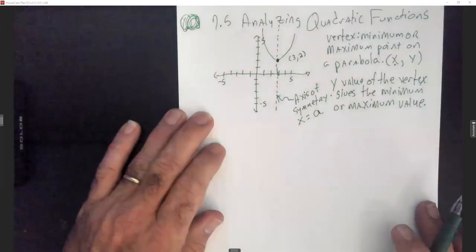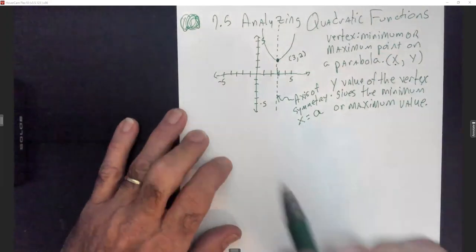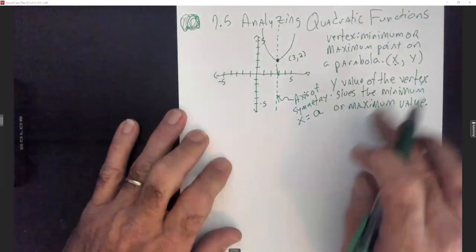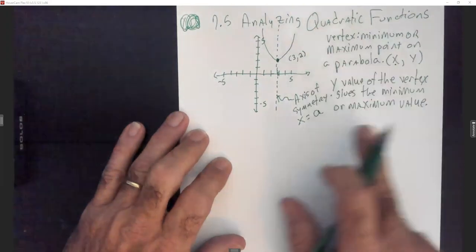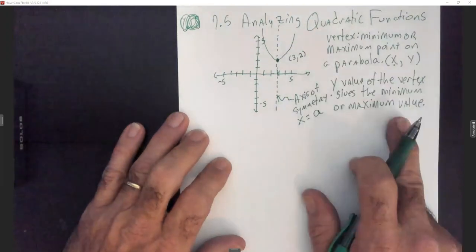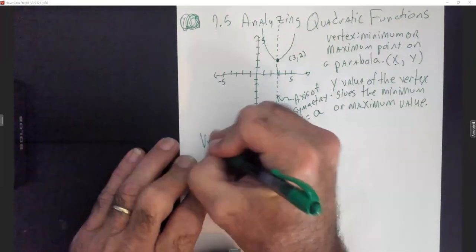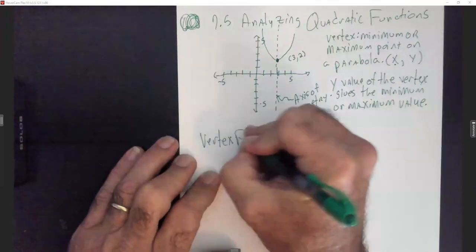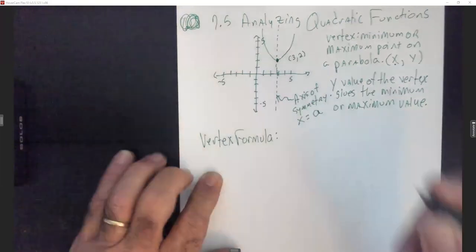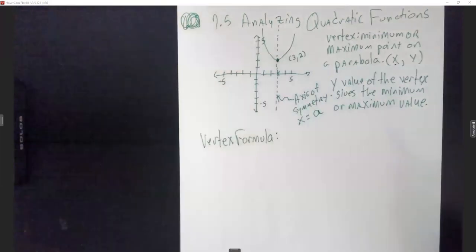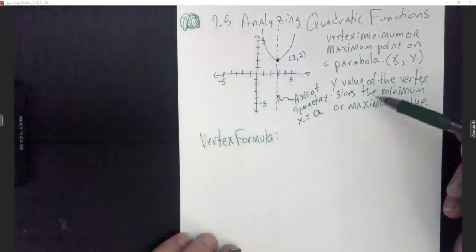I've got a formula to find all these values — the vertex. Once I've got the vertex, I can find my line of symmetry and my min or max value. So here's another question: how will I know if I've got a minimum or maximum value?